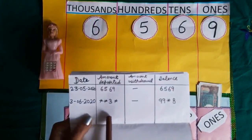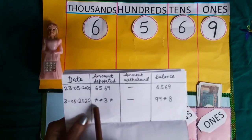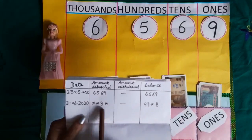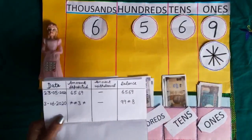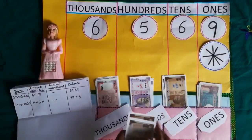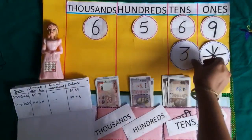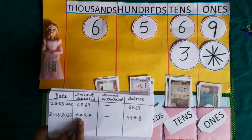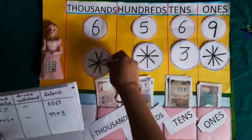Her father deposited some amount on June 3rd, 2020, but it is not clear. We can see only 30 rupees. There is nothing at the 1s place, so we place a star at 1s place. We have 30 rupees — 10, 20, 30 — and we place 3 at 10s place. There is nothing to see at 100s place and 1000s place, so we place a star at 100s and a star at 1000s place.